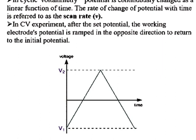In cyclic voltammetry, one simple term is scan rate. Scan rate means the increase or decrease in potential with time — the changing potential with time. This is the scan rate.